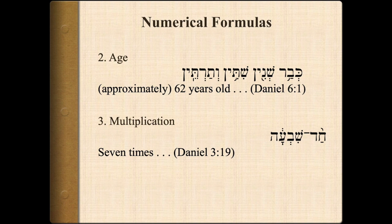For age, we have a place in Daniel where this occurs. Here we use the term 'son' — bar — approximately meaning 'son of years, 60 and 2,' which means 62 years old.